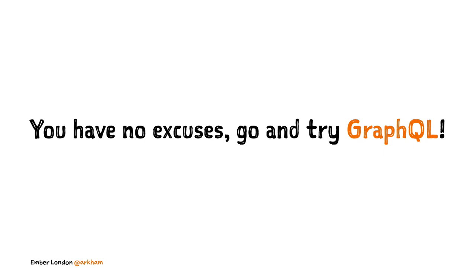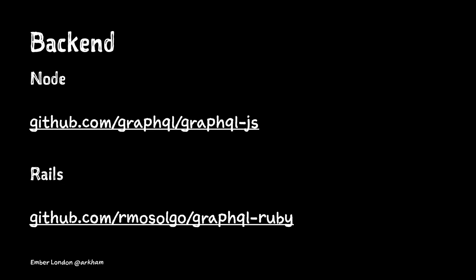On the backend, there's a reference implementation made by Facebook called GraphQL JS. What we're using on Ruby is a gem called GraphQL Ruby, which gives you the ability to expose a GraphQL endpoint. You can specify the types, different types of queries and mutations, provide callbacks, and do a lot of the things in the GraphQL specification.